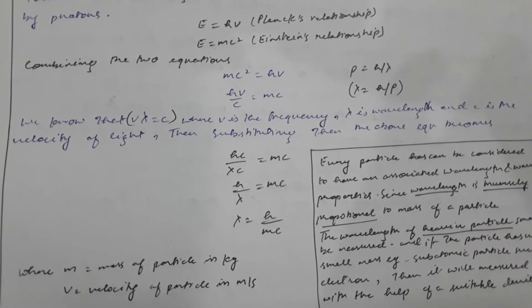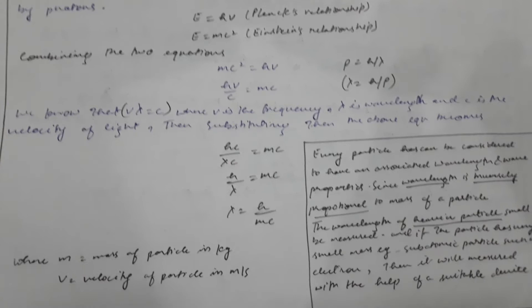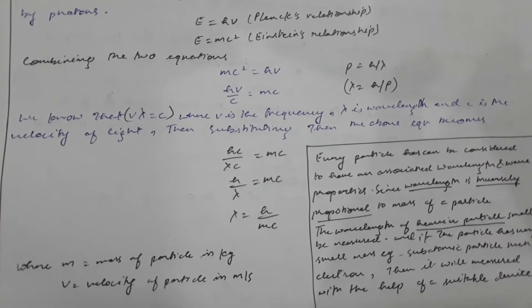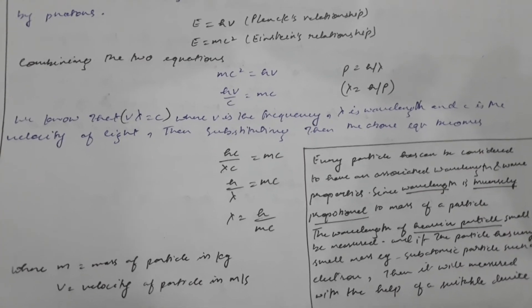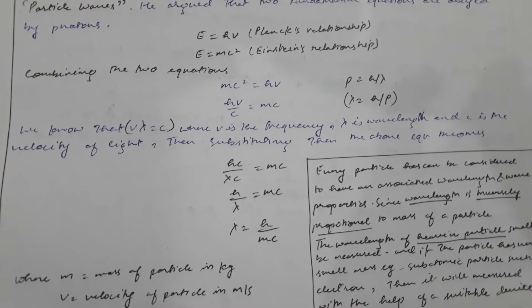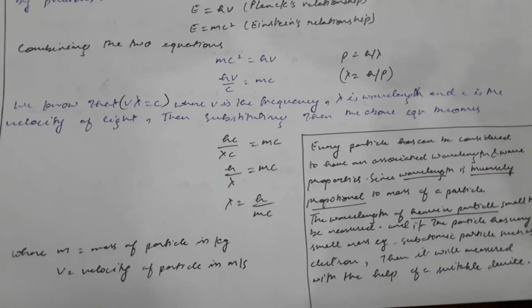Lambda becomes lambda equals h over p. We know that ν times lambda equals c, where ν is the frequency, lambda is the wavelength, and c is the velocity of light.